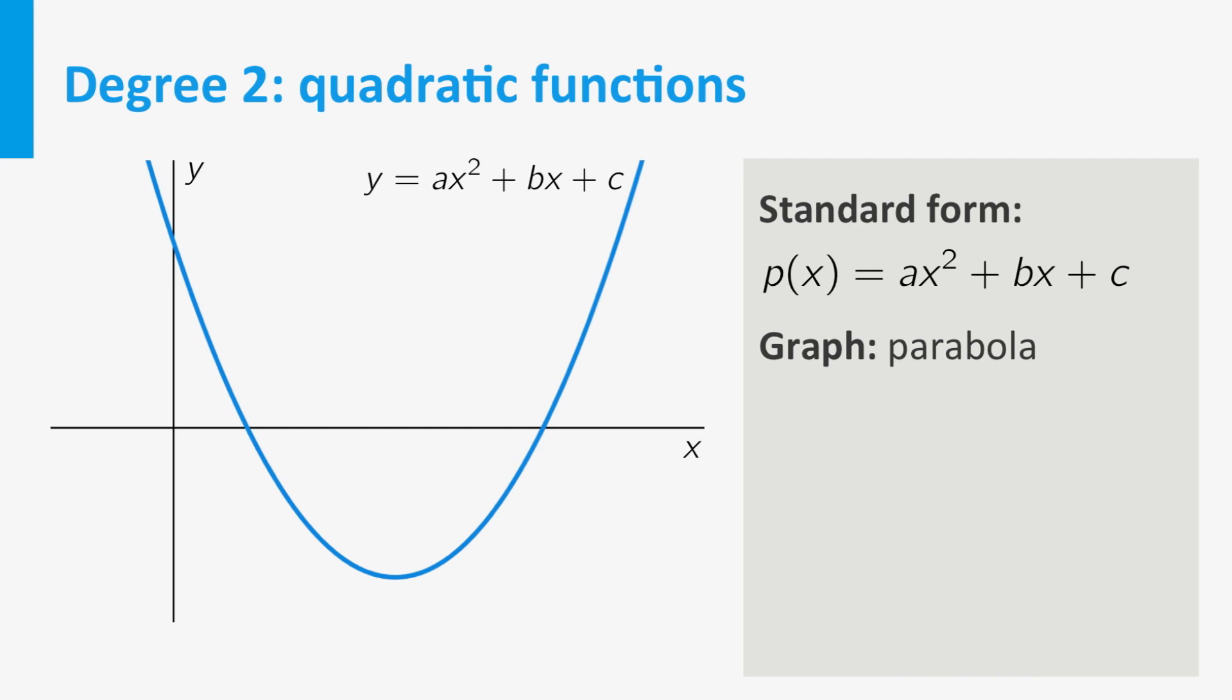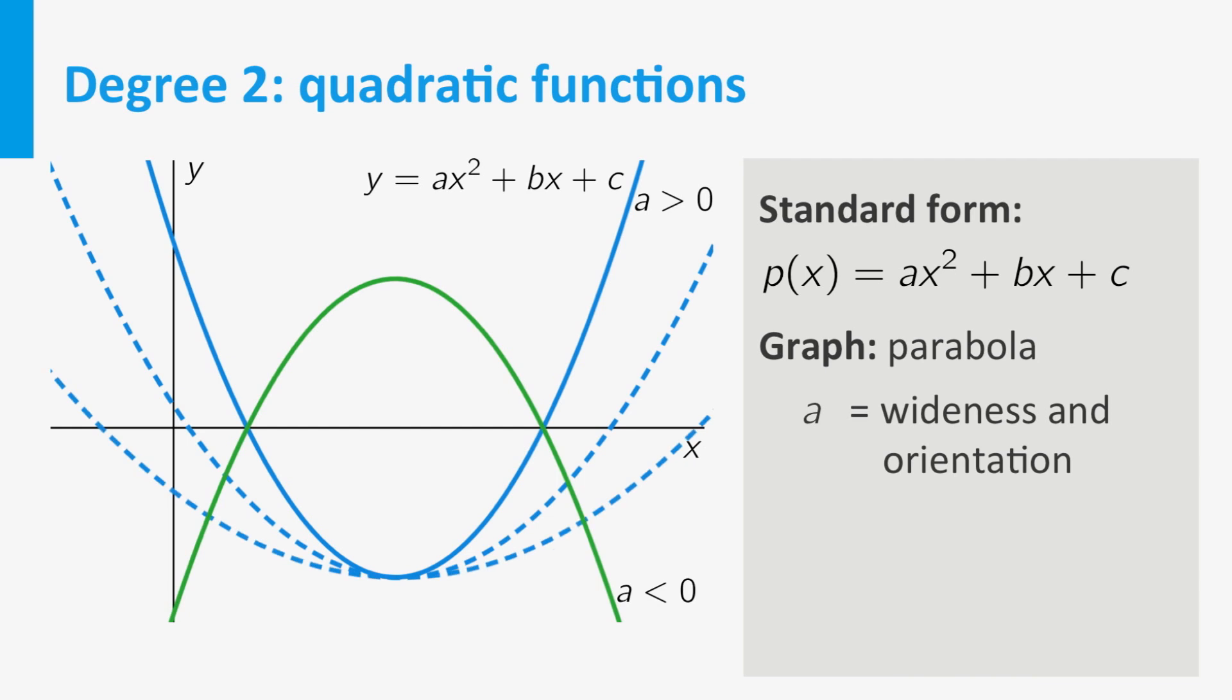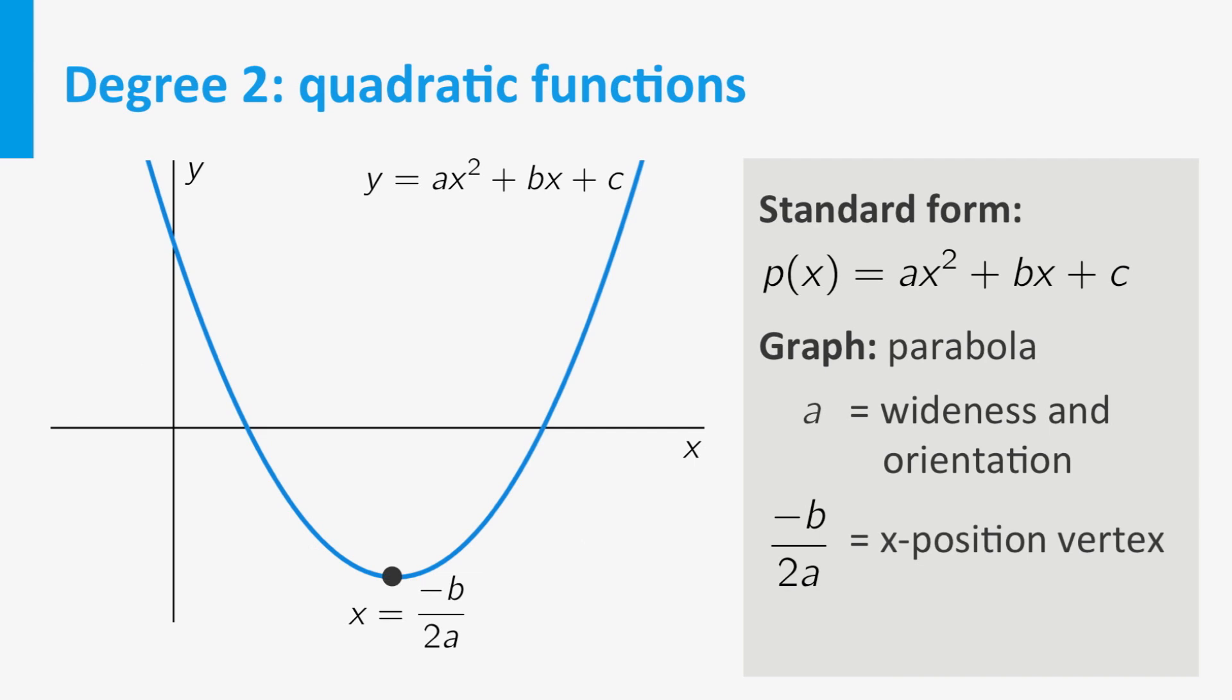The relation between the coefficients a, b and c on the one hand and the shape of the graph on the other is not as clear as in the case of linear functions. However, we can at least say the following. a is a measure for the wideness and orientation of the parabola. If a is positive, the parabola opens upward. If it is negative, it opens downward. Also, the closer a to zero, the wider the parabola. Furthermore, the x-coordinate of the vertex of the parabola is located at x equal to minus b divided by 2a. And finally, c again gives the y-intercept of the graph.